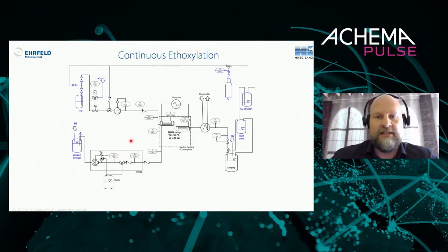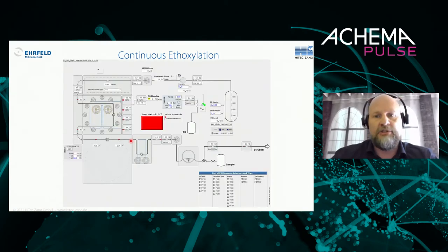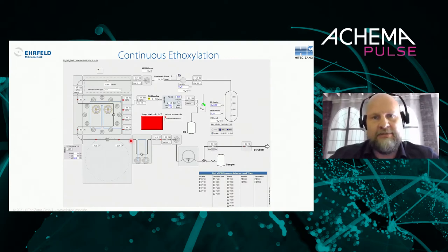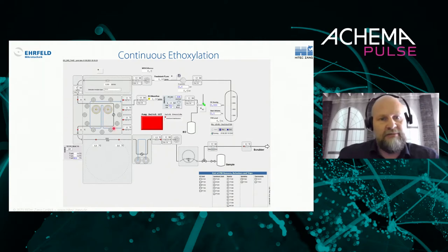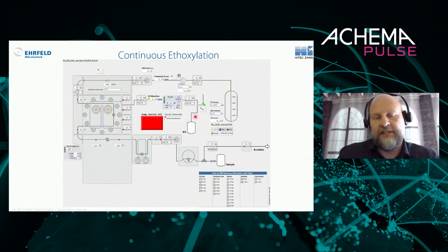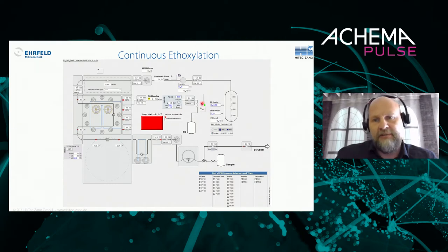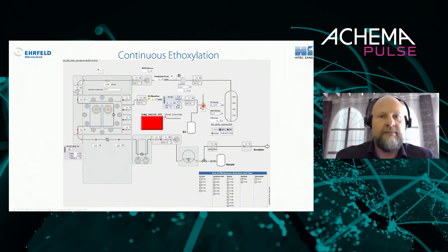The next slide shows a project we set up for ethoxylation, which may not look very complex in terms of hardware but is one of the most complex projects we've had in terms of process control and automation. We have our reactor with residence time extension, a feedstock feed, and an ethylene oxide feed. The ethylene oxide feed is controlled by a pneumatically driven valve — it is critical that no EO reaction can occur if anything goes wrong in the system.